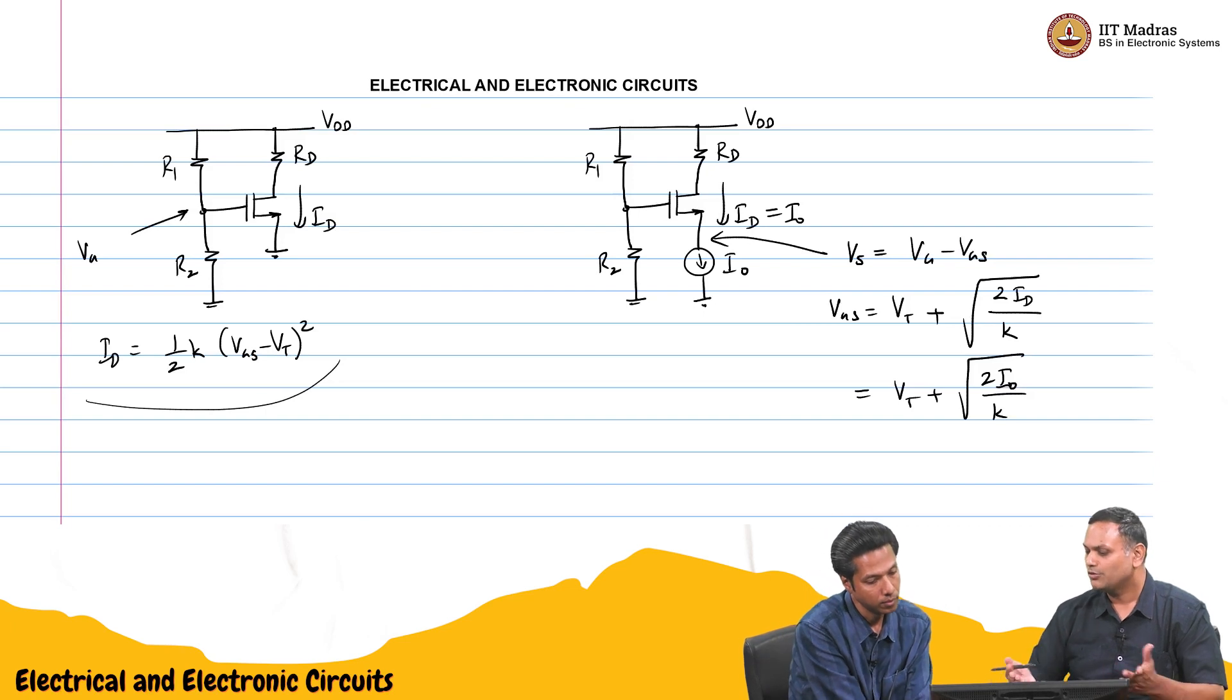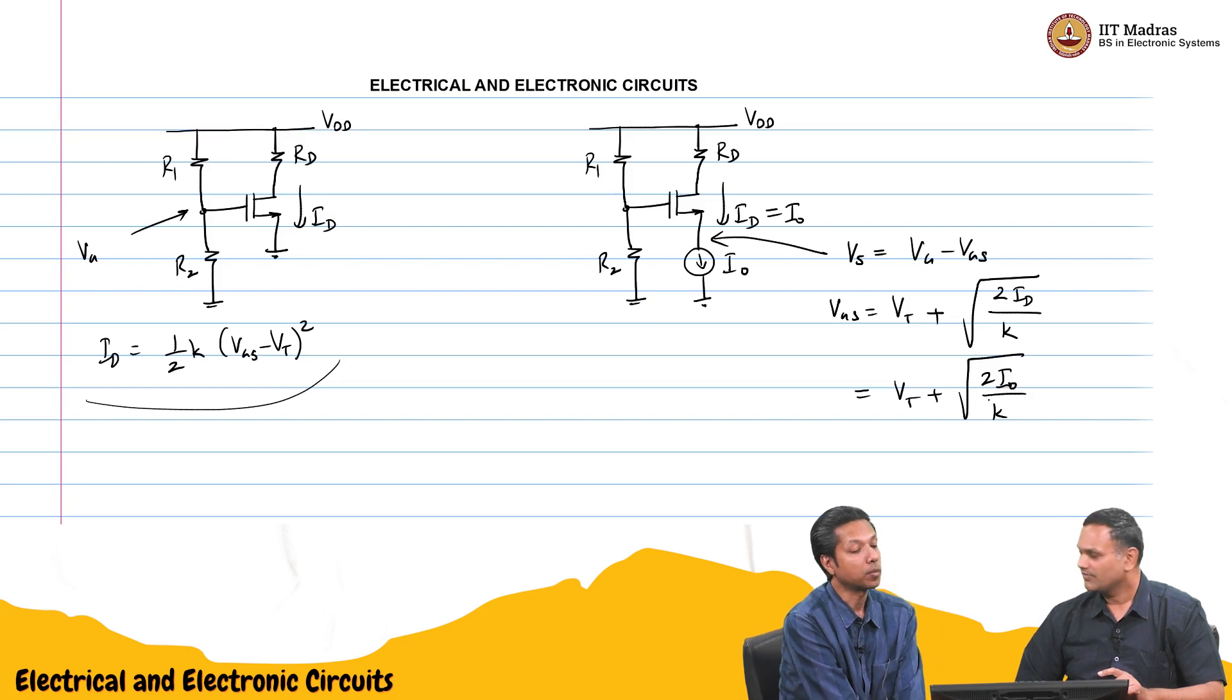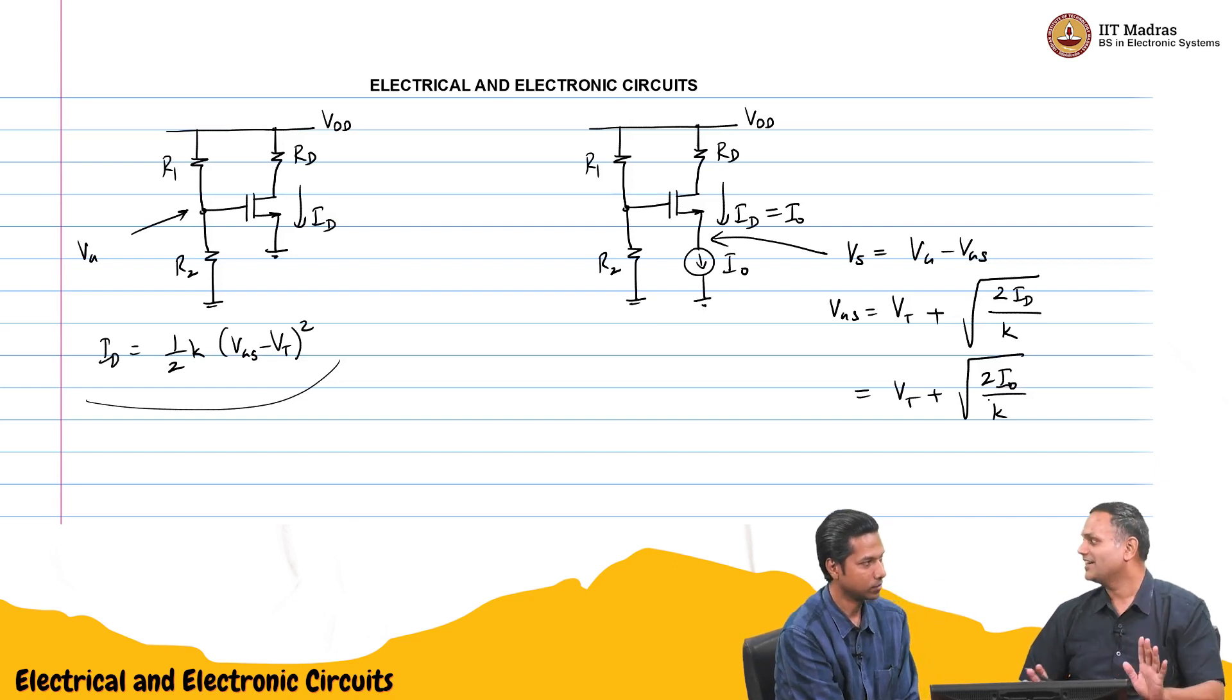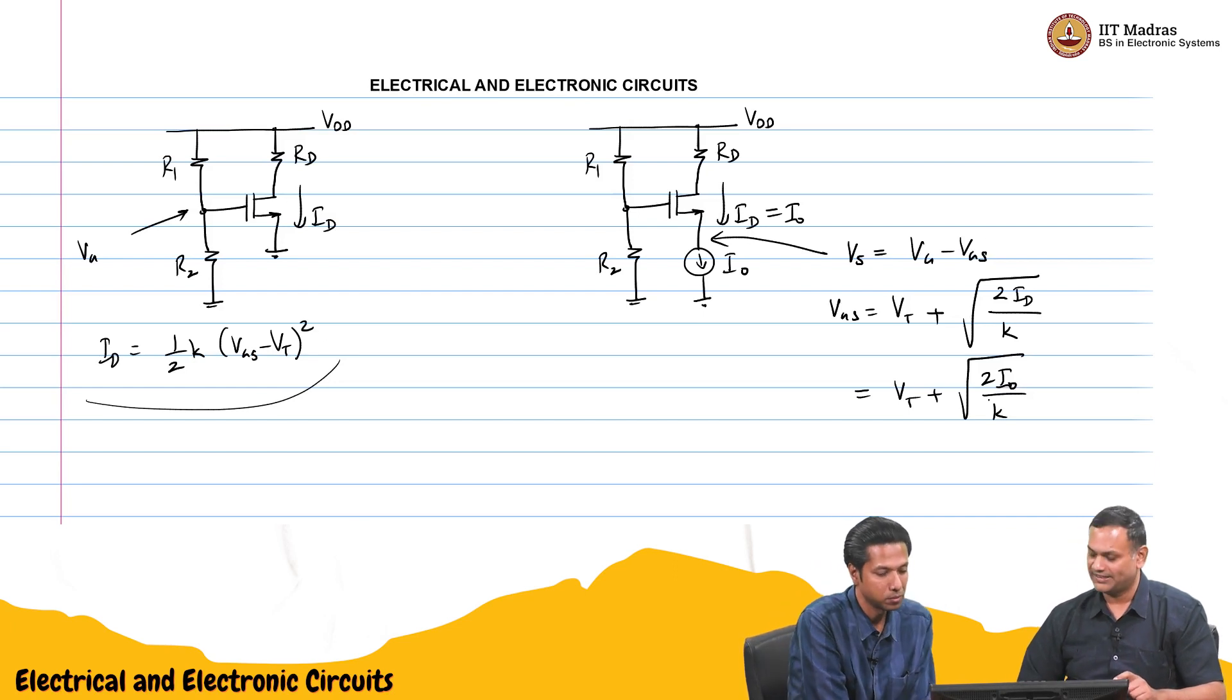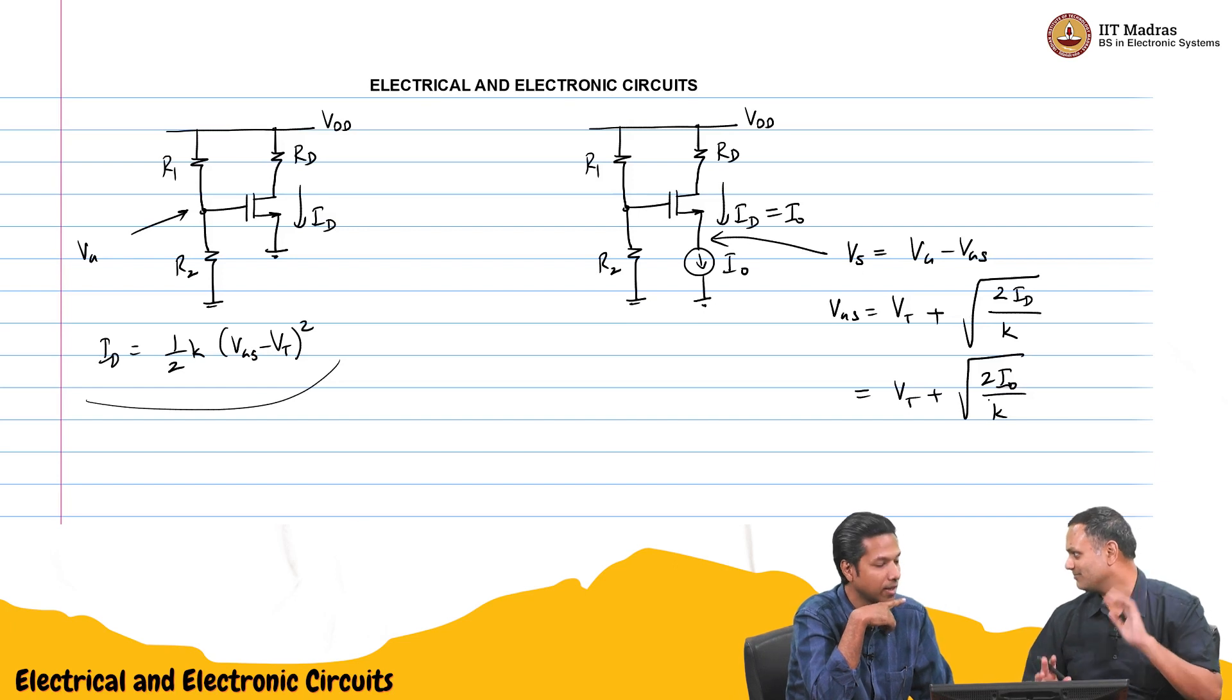You can build the same circuit that you built for the BJT here also. And the purpose of this biasing is same as that of the earlier. You want to fix the bias current. Correct.